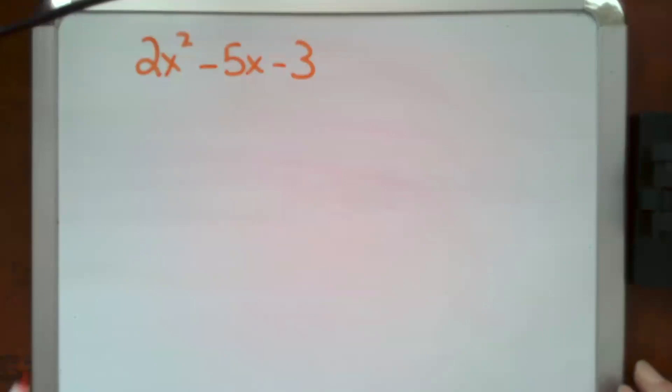So let's say you've been given the equation 2x squared minus 5x minus 3 and you are asked to find the vertex, the axis of symmetry, and the zeros.